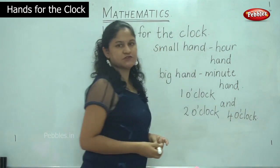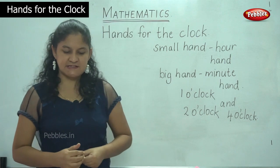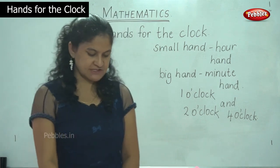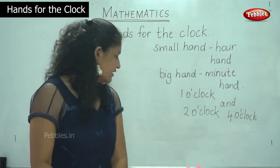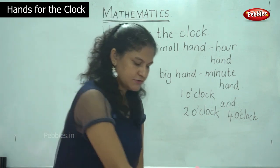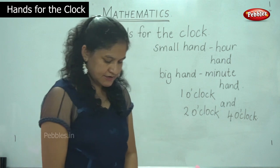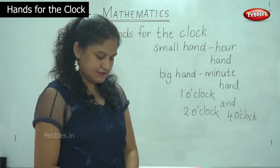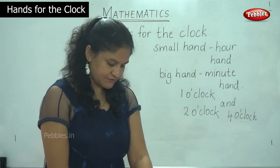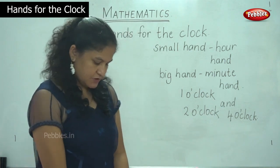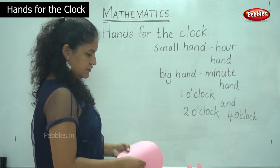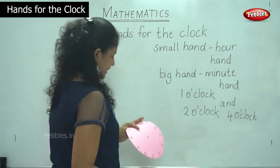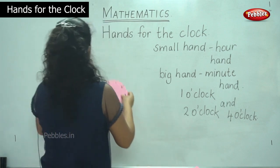So today we are going to see these three different timings, that is 1 o'clock, 2 o'clock and 4 o'clock. These are the three different timings we are going to draw.